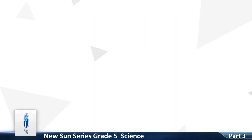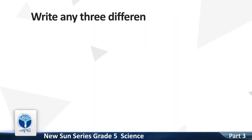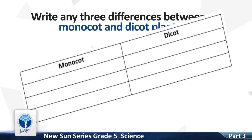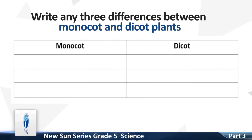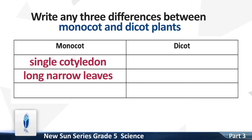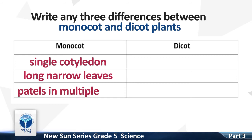Number 2. Write any three differences between monocot and dicot plants. Monocot: single cotyledon, long narrow leaves, petals of flowers in multiples of three.